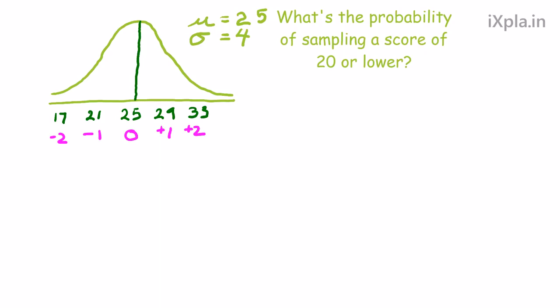Well, the z-score step is always equal to the standard deviation. That's why we went from 25 to 29, 29 to 33. And then we go down from 25 to 21 and 17.